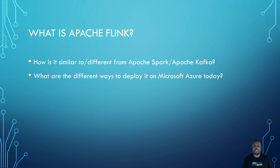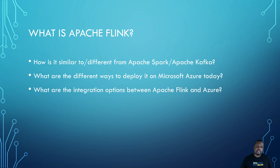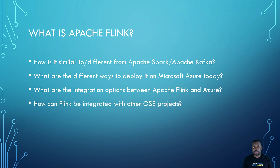If you want to do it locally, you can also use Docker to run Flink in your development environment to test out the application before pushing it to production on virtual machines or Kubernetes. There are also a lot of integration opportunities between Apache Flink and Microsoft Azure, as well as with other open source software projects like Apache Kafka, Elasticsearch, and many others — all of which will be covered in upcoming videos.